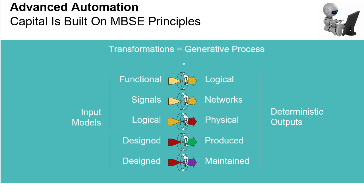One key example of advanced automation is how input models are transformed through generative processes to produce deterministic outputs. This is done in every domain. Functional designs are automatically transformed to logical designs, which are then transformed to physical designs, and so on. Your intellectual property, captured as rules, allows knowledge to be reused such that it controls the automation for your purposes.